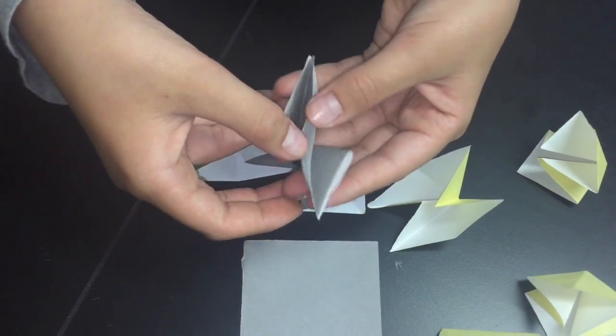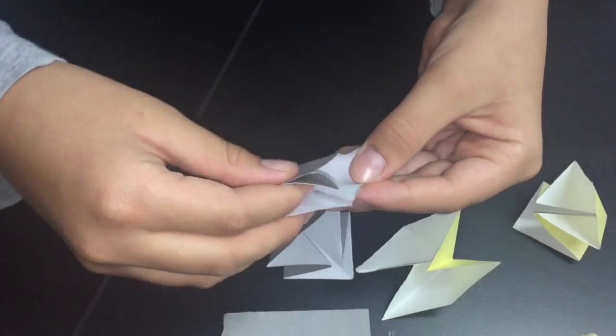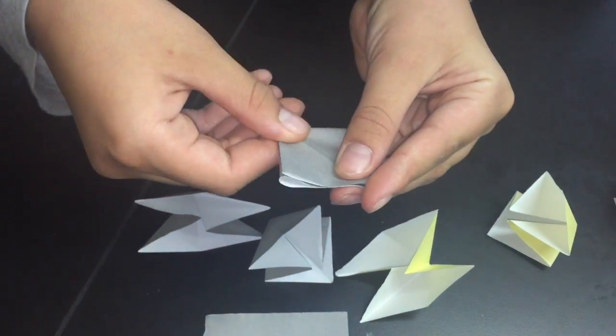Open it up and fold it in half so that you have a square. And you need six of these.